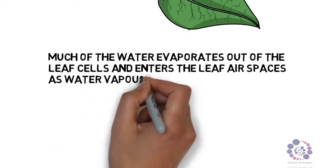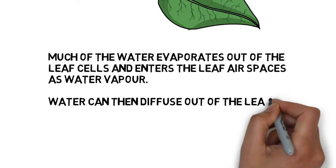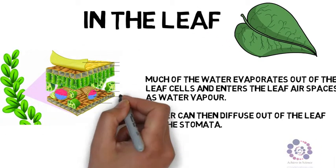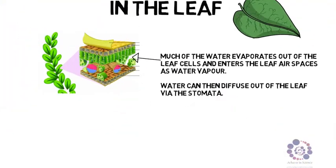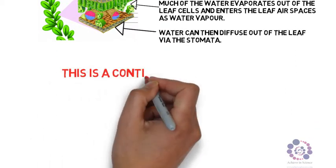Water can then diffuse out of the cells via little holes called stomata at the base of the leaf usually. As you can see from the diagram of the cross section of the leaf, you can see where the water vapor is within the leaf, and then you can see the gaps or holes at the base called the stomata, whereby water can leave.